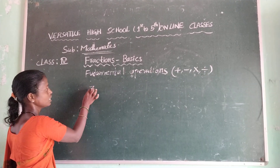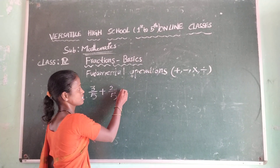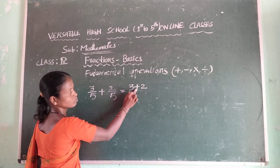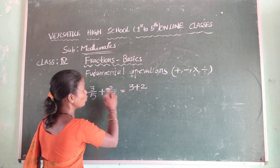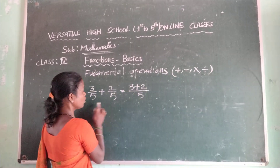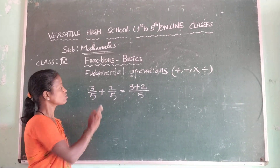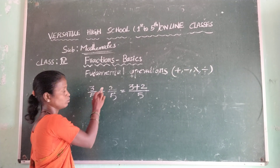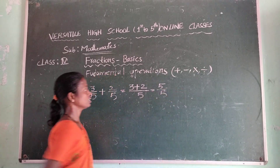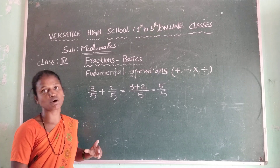Fundamental operations of like fractions. Only like fractions: three by five plus two by five. We add only the numerators — three plus two — and keep the denominator the same. Don't add the denominators; we are adding only the shaded parts. So three plus two by five equals five by five. This is the fundamental operation of addition of like fractions.